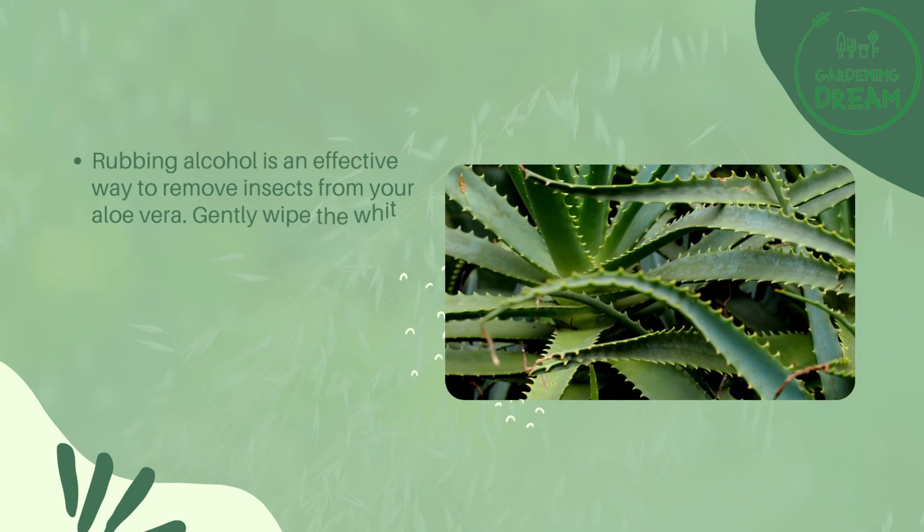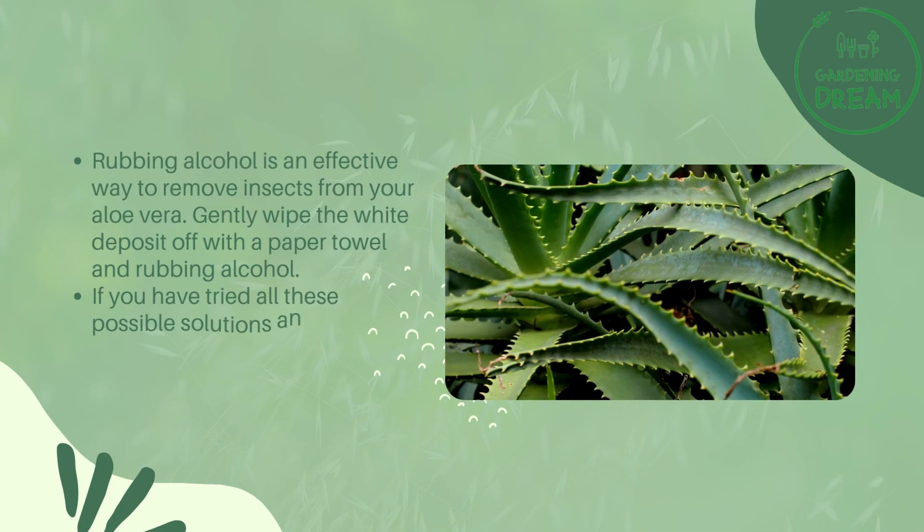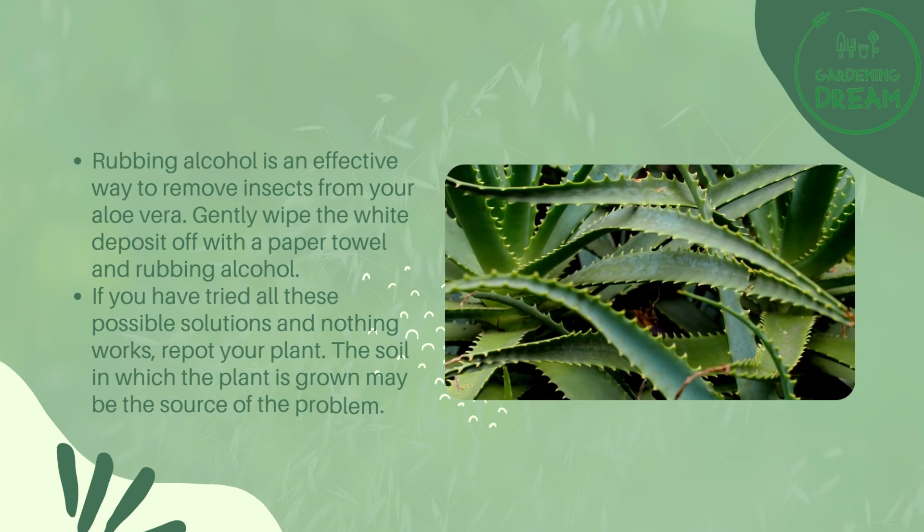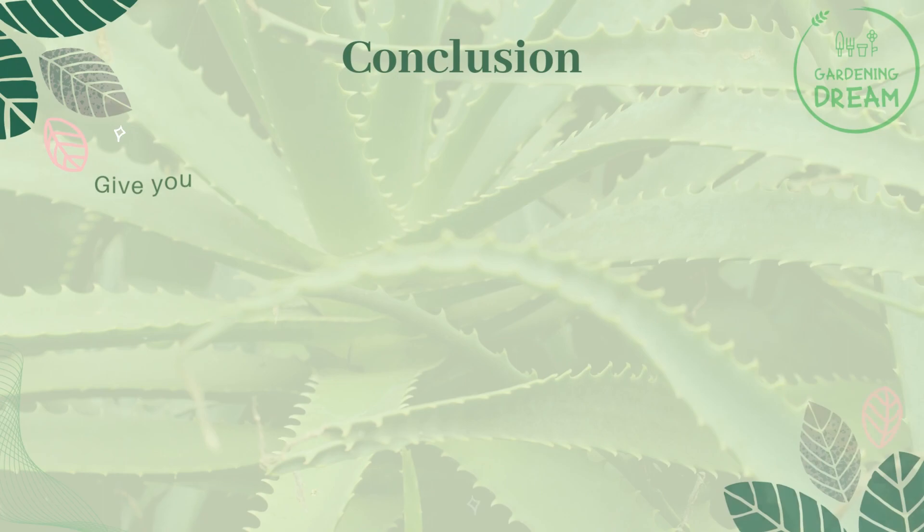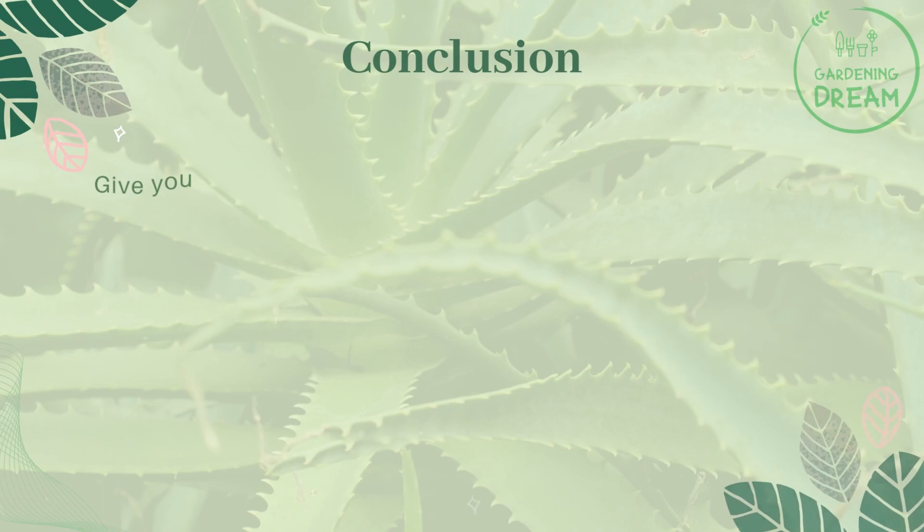Rubbing alcohol is an effective way to remove insects from your aloe vera. Gently wipe the white deposit off with a paper towel and rubbing alcohol. If you have tried all these possible solutions and nothing works, repot your plant. The soil in which the plant is grown may be the source of the problem.